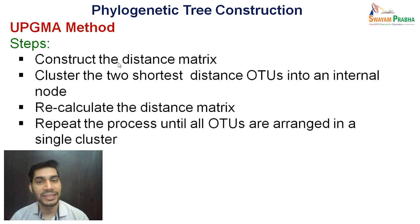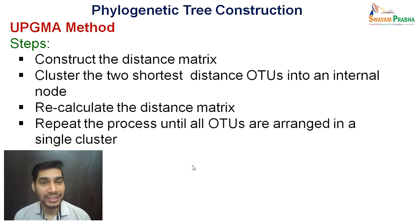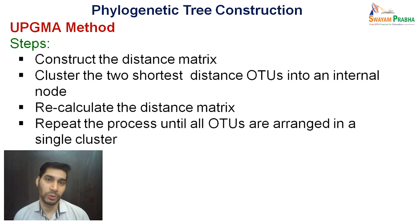There are certain steps. First, construct the distance matrix. Then cluster the two shortest-distance operational taxonomic units or OTUs into an internal node. Recalculate the distance matrix, then repeat the process until all OTUs are arranged in a single cluster. So the four basic steps are: construct the distance matrix, join the two shortest-distance OTUs into an internal node, recalculate the distance matrix, and keep repeating.